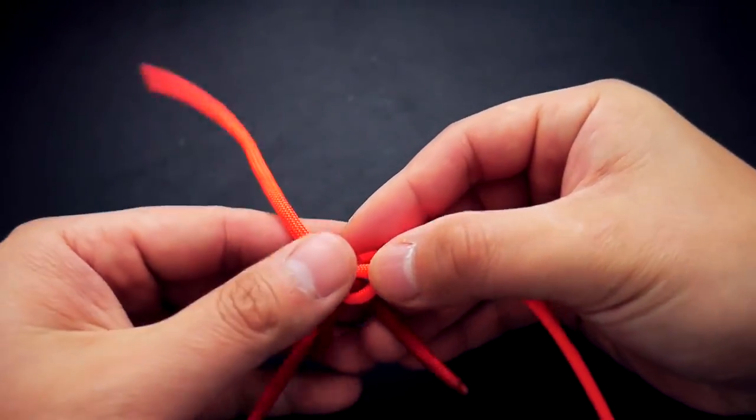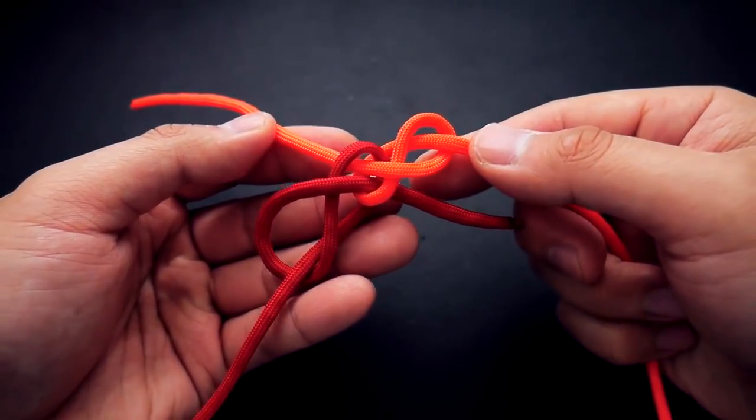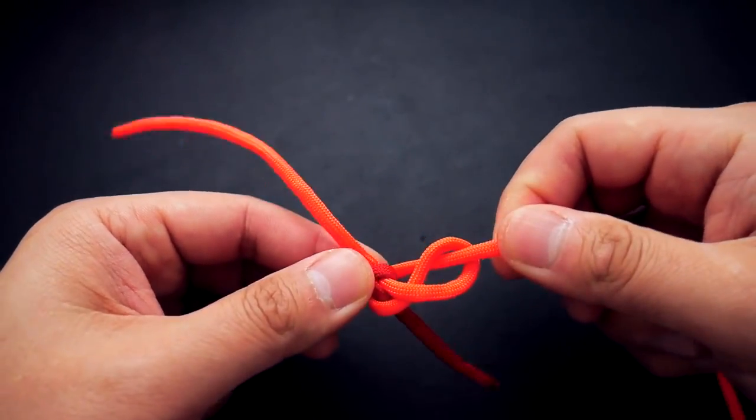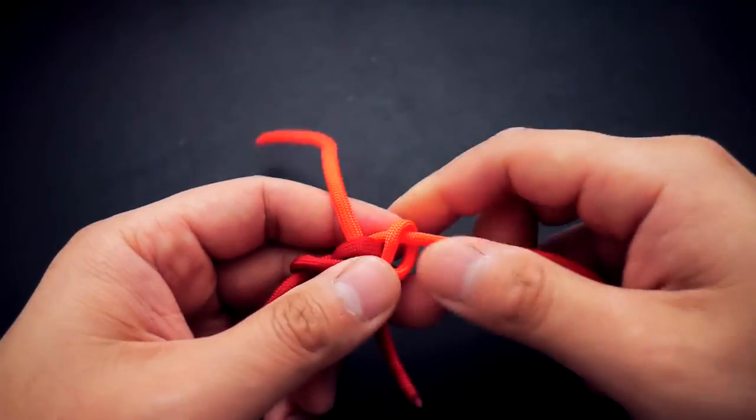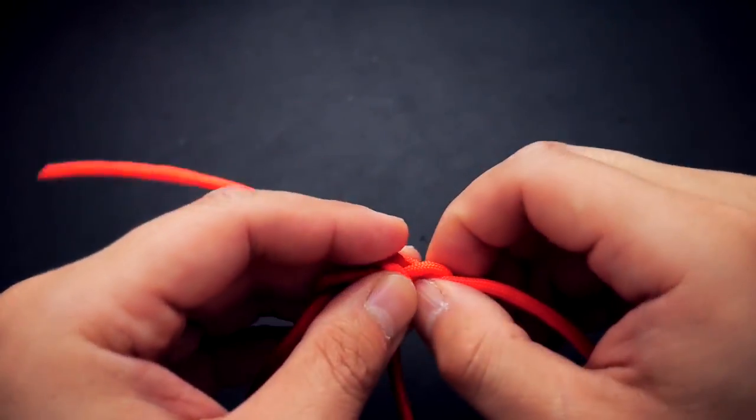Now all you're going to do is cinch up the knot. Start pulling on the longer strands and go a bit slower if you have to. If you have some excess cord, you can work that out at the end. I'm just going to start firming up this knot, trying to keep it nice and flat and work out all the excess.